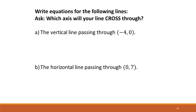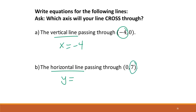For the vertical line passing through negative 4, 0: with a vertical line we use x equals, and the x value is negative 4, so x equals negative 4. A horizontal line uses y equals a number, and it's the y value of the point given, so y equals 7.